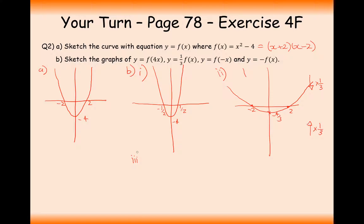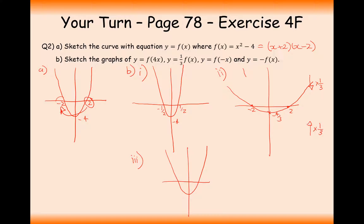Part 3 is y equals f of minus x. The inside-the-bracket transformation reflects horizontally. So 2 reflects over to minus 2, and minus 2 reflects over to 2. Because this graph is symmetric, we get exactly the same graph as we had for f of x.